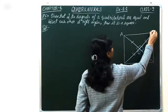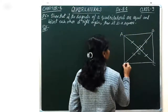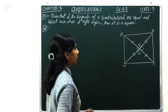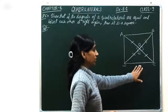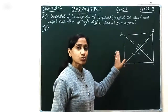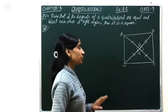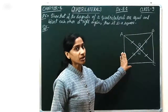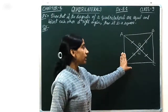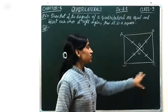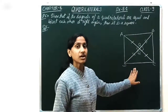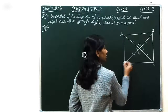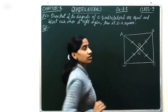Let's say the vertices are A, B, C, D and the intersecting point is O. We have to prove that this quadrilateral is a square. So first we have to show it is a parallelogram. After that, if a parallelogram has 4 equal sides and interior angles of 90 degrees, then the parallelogram is a square.